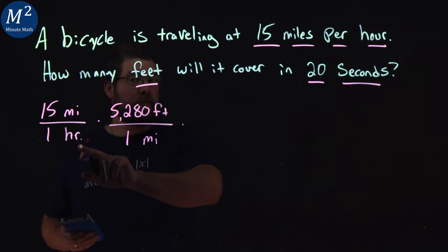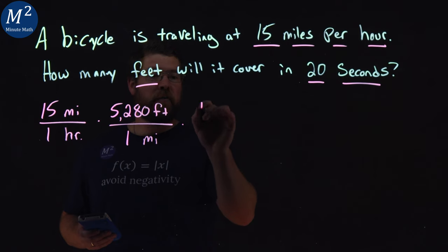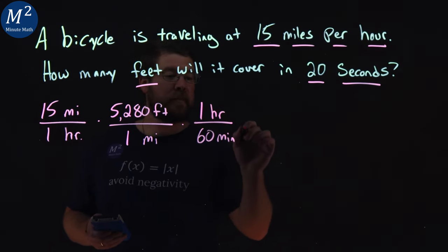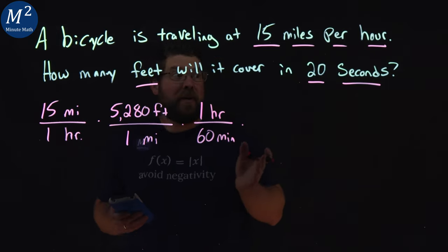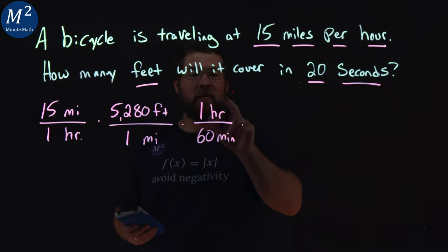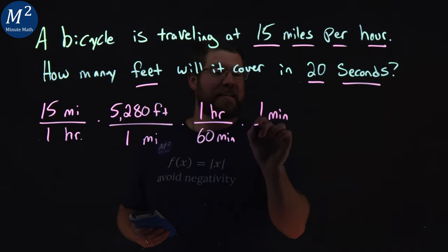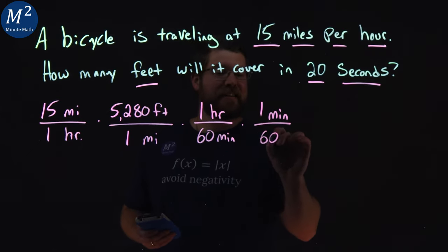Now we're going to multiply that. Now we want to convert the hours. So the hours to minutes, there is one hour per 60 minutes, and we want to write it in seconds. So for one hour and 60 minutes, one minute is 60 seconds.